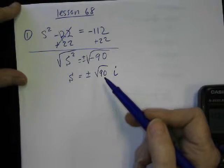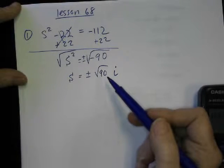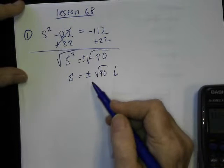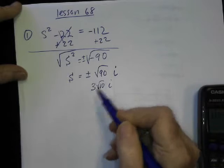Now 90, I know 9 goes into 90, and 9 is a perfect square, so it's kind of like I could write that as 9 times 10, and when the 9 comes out, it turns into a 3. So this is going to be written as 3 root 10 times I.